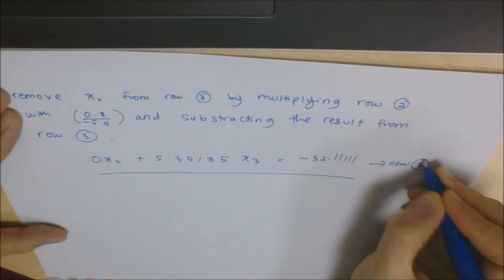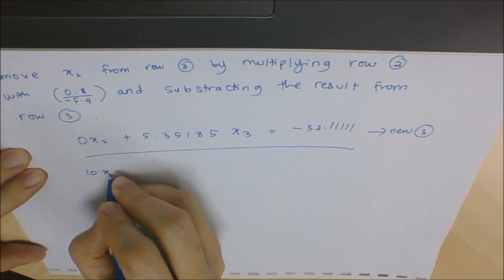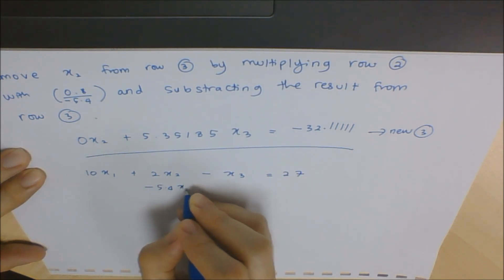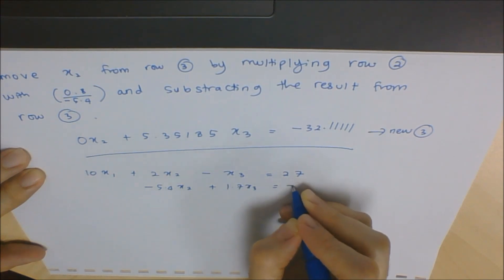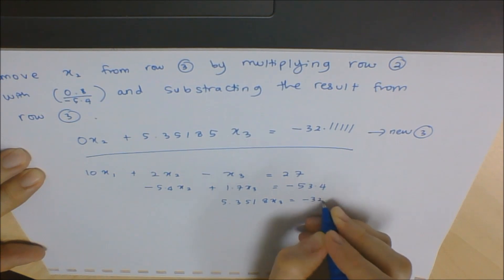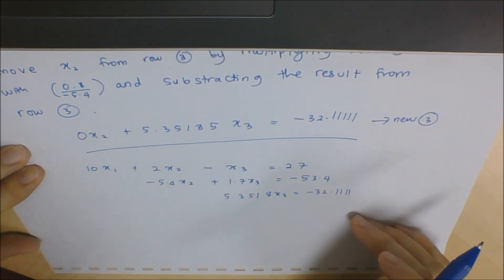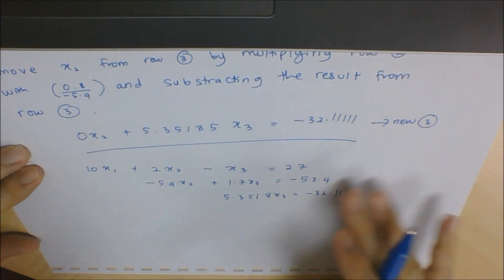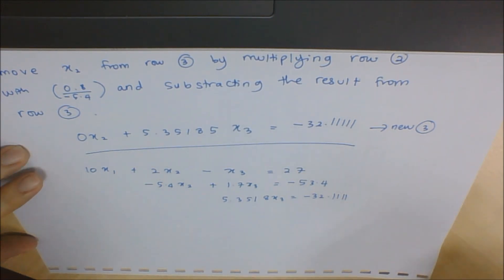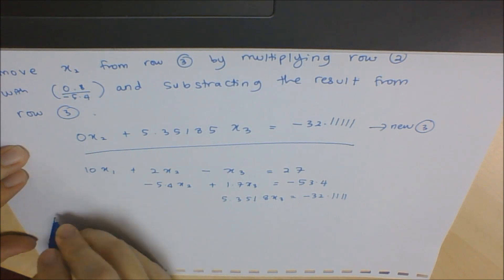Now listing all equations after forward elimination: equation 1 is 10x1 + 2x2 - x3 = 27; equation 2 is -5.4x2 + 1.3x3 = -53.4; and equation 3 is 5.3518x3 = -32.1111. Note that in this demonstration I haven't fixed a specific number of decimal places, but in a test or exam you should follow the decimal places stated by the question. Now it is time for back substitution.